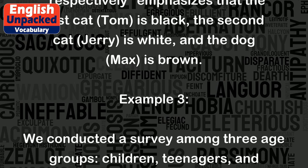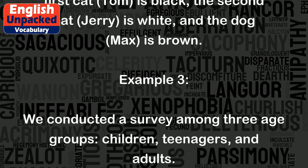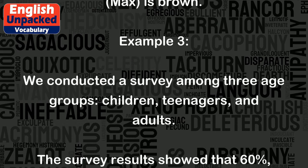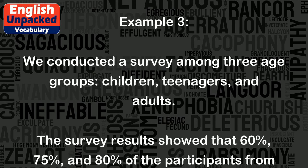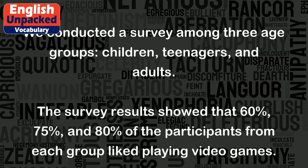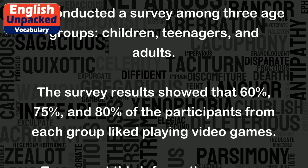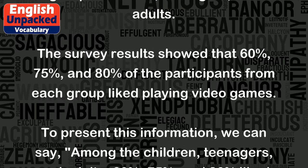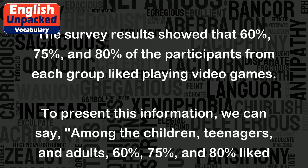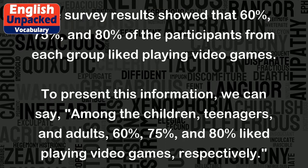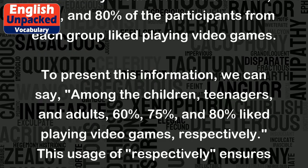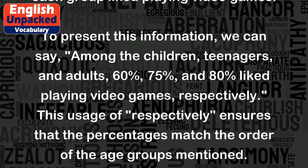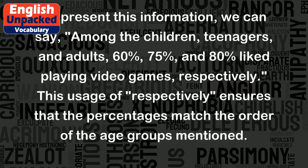Example 3: We conducted a survey among three age groups — children, teenagers, and adults. The survey results showed that 60%, 75%, and 80% of the participants from each group liked playing video games. We can say: among the children, teenagers, and adults, 60%, 75%, and 80% liked playing video games, respectively.